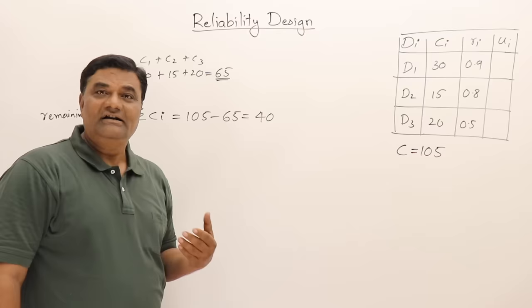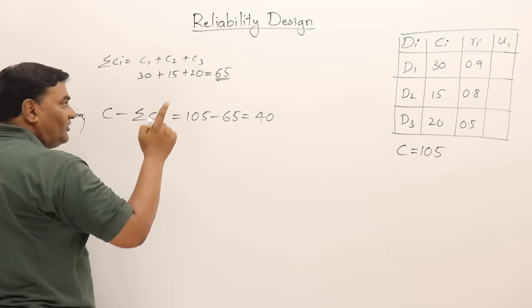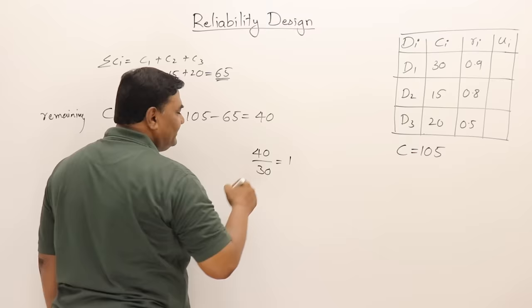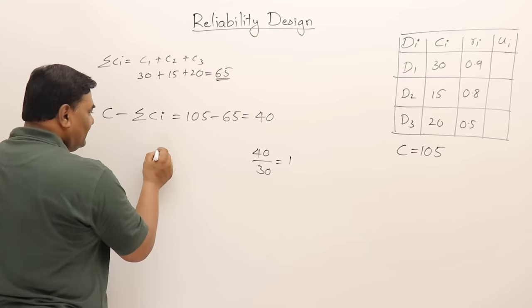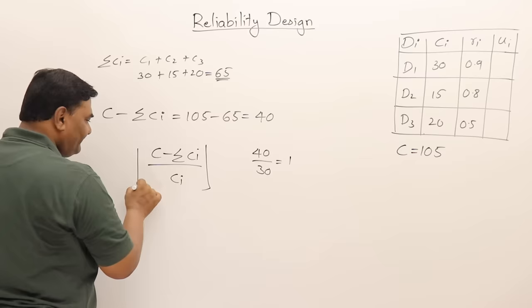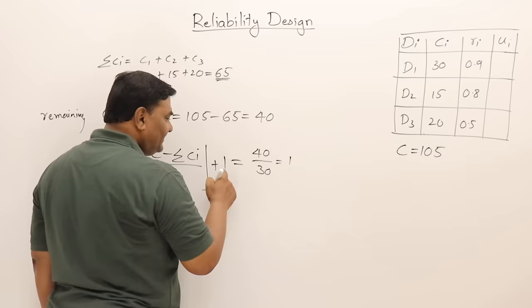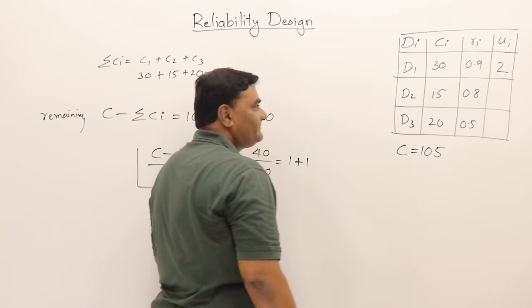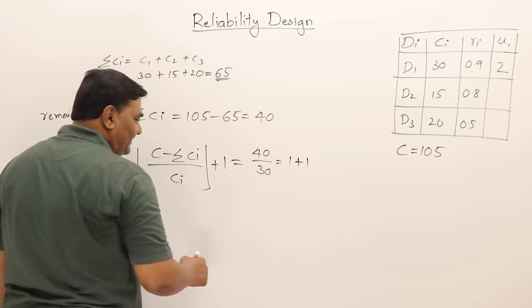The formula for the upper bound is: floor(remaining / c_i) + 1. For device 1 with cost 30: floor(40/30) + 1 = 1 + 1 = 2 copies. For device 2 with cost 15: floor(40/15) + 1 = 2 + 1 = 3 copies. For device 3 with cost 20: floor(40/20) + 1 = 2 + 1 = 3 copies. This gives the upper bound — the maximum total copies of each device I can take.